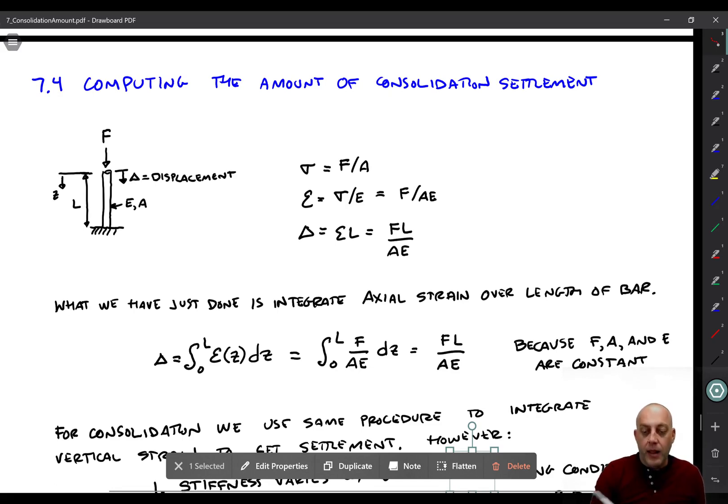So we substitute in the equation for Epsilon Z. Epsilon is just F over AE. Those are constants. You can pull them outside of the integral. And when you integrate, you just get FL over AE. Because F, A, and E are all constants. They don't depend on depth.